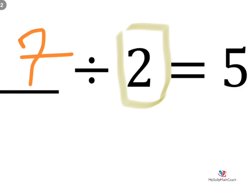7 divided by 2, does that equal 5? Well no, 7 divided by 2 is actually a decimal number, 3.5. If you don't know what a decimal number is, that's okay. We can try another number.